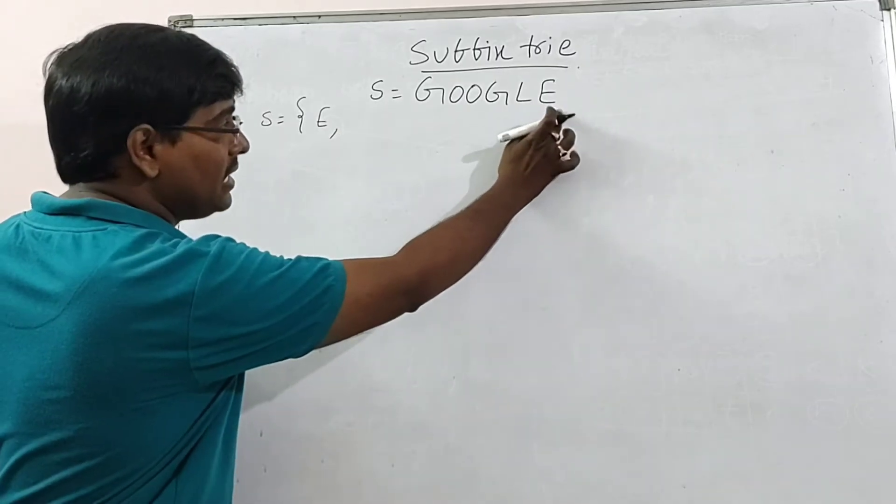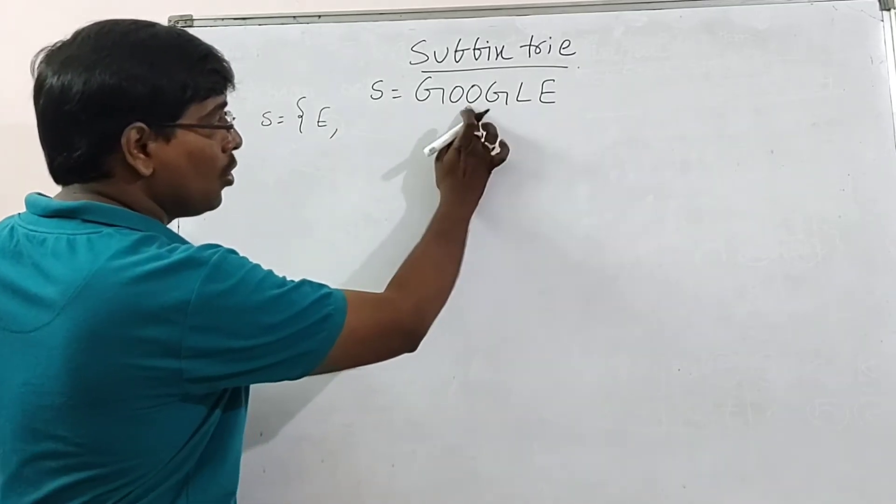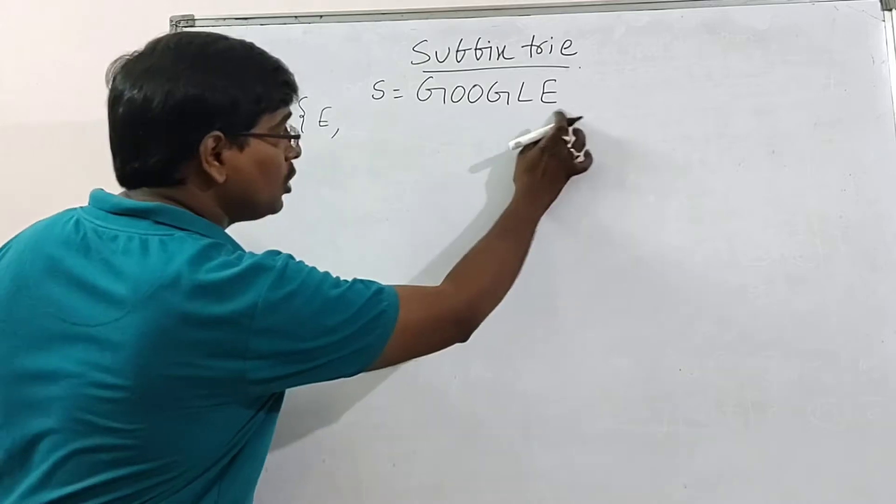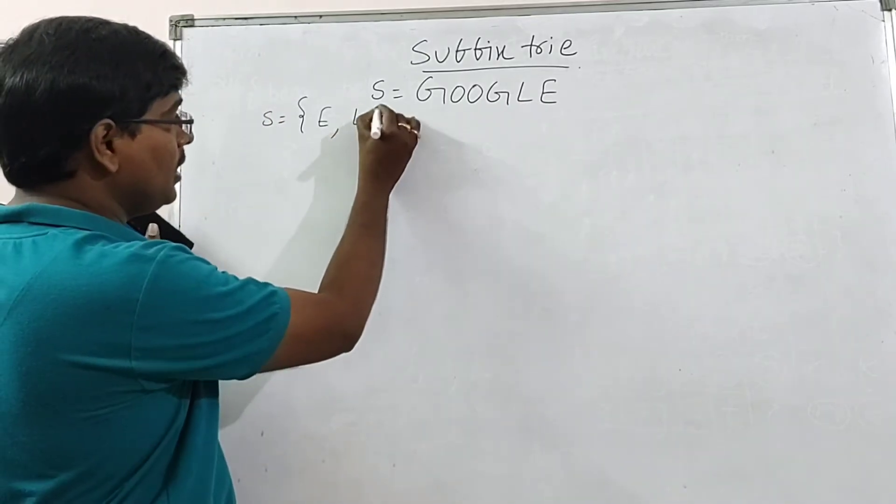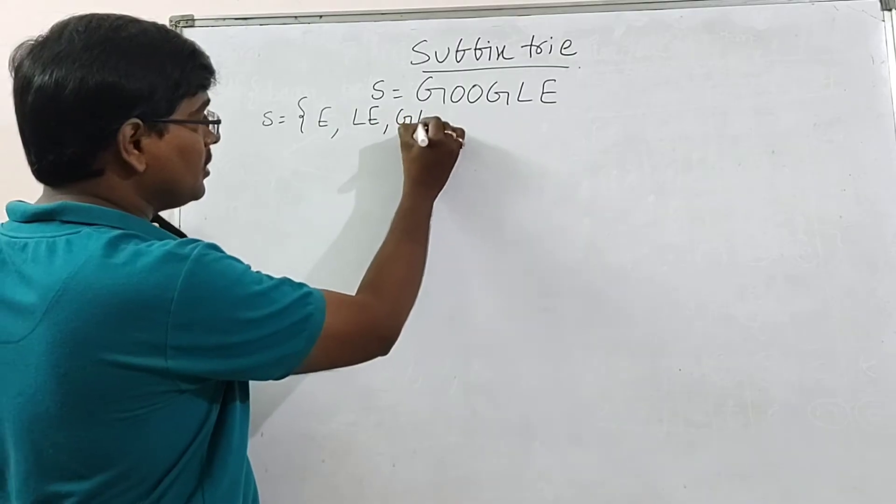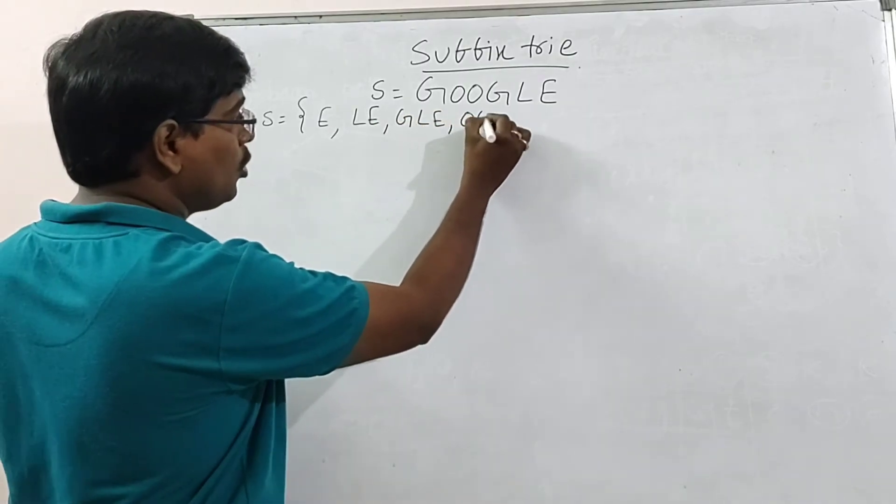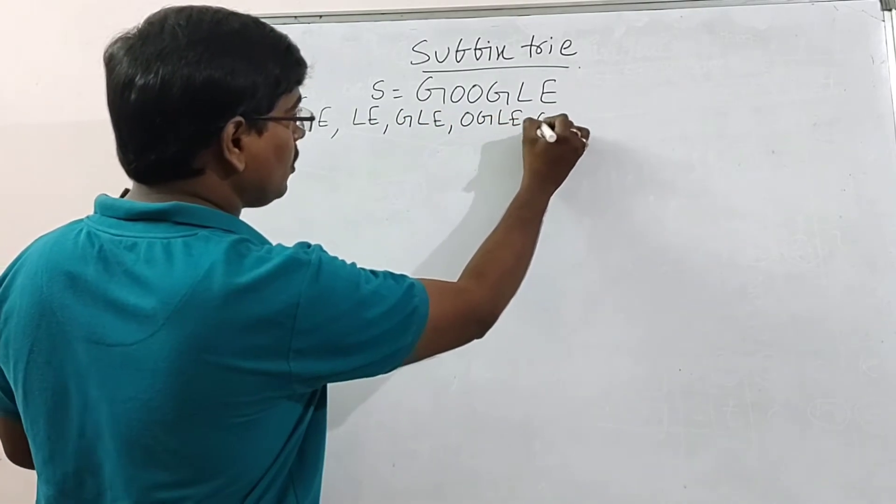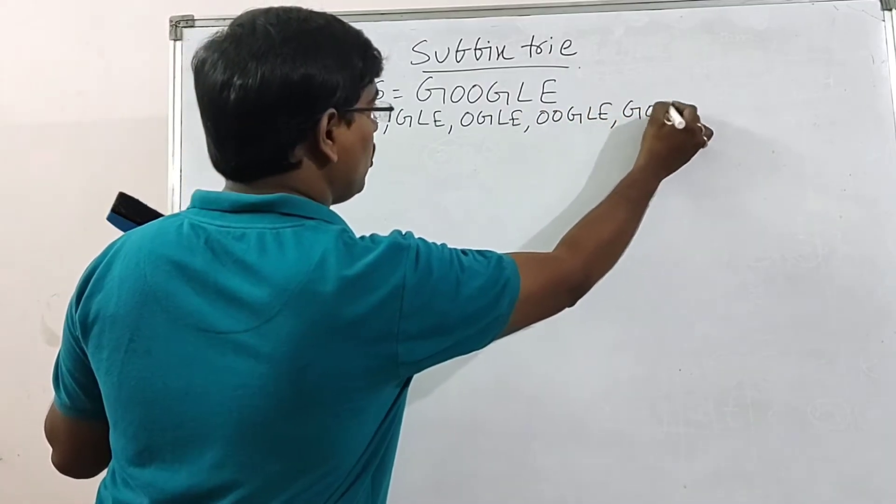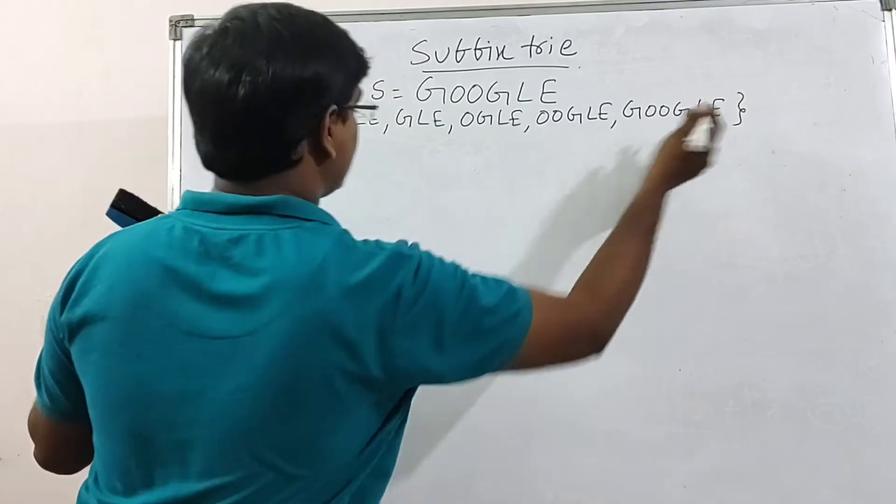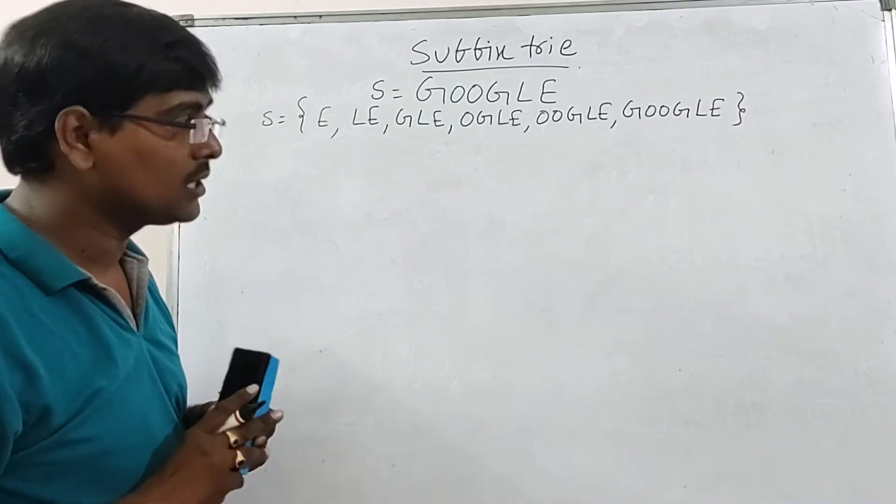You know the suffixes. What are the suffixes? E, L-E, G-L-E, O-G-L-E, O-O-G-L-E, and G-O-O-G-L-E. So, okay, these are the suffixes.